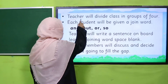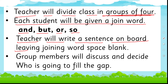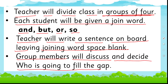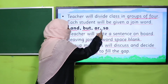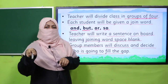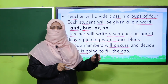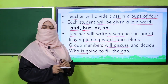Let's practice through an activity. The teacher will divide the class into groups of four. Each student will be given one joining word — one gets 'and,' one gets 'but,' one gets 'or,' one gets 'so.' The teacher will write a sentence on the board leaving a blank for the joining word. The group will first discuss and decide which member is going to fill the gap. Pause the video, enjoy this activity, and then come back.